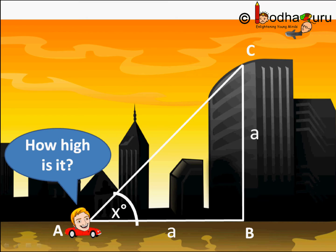And let us say this angle x is 45 degree. So ABC is a right angle triangle and we know sum of all the three angles of a triangle is 180 degree.